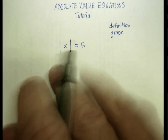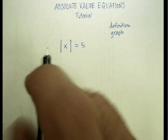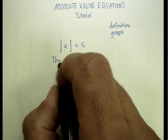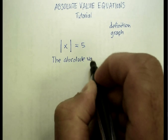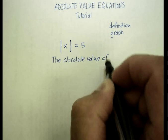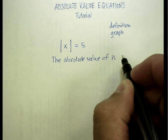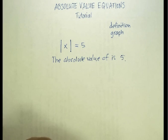So let's say I want to say something like, the absolute value of x is 5. Okay, now what does that mean?